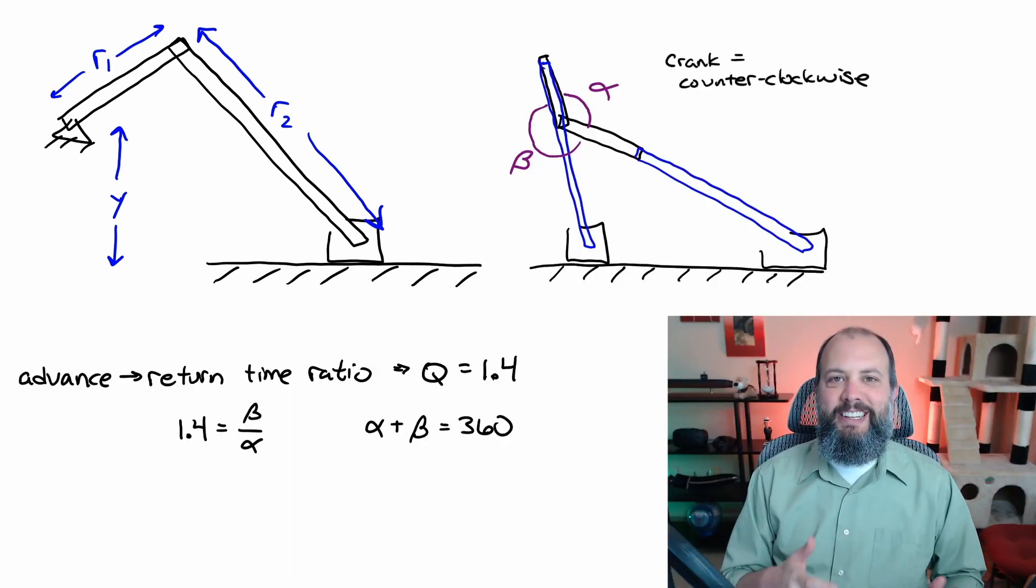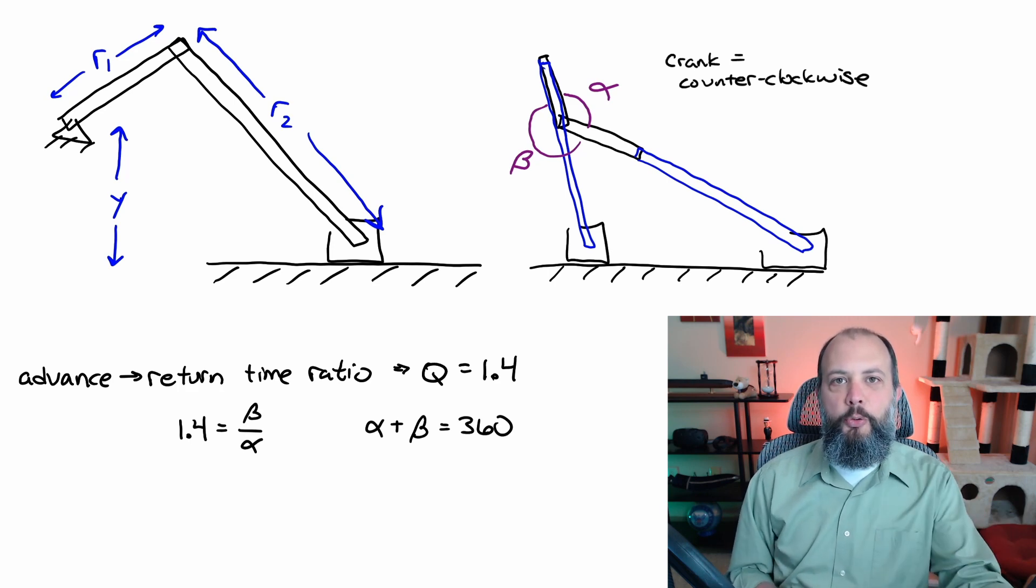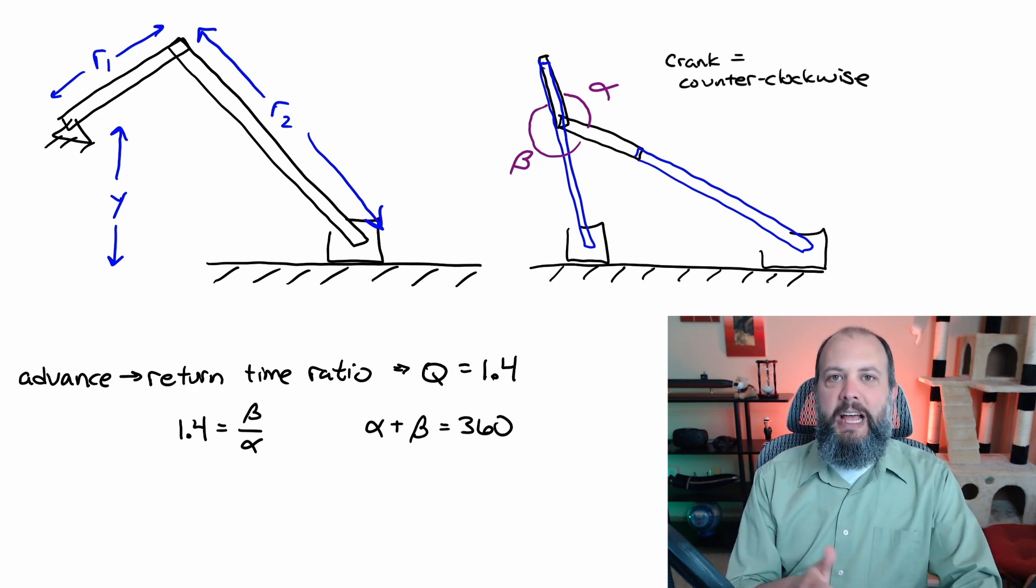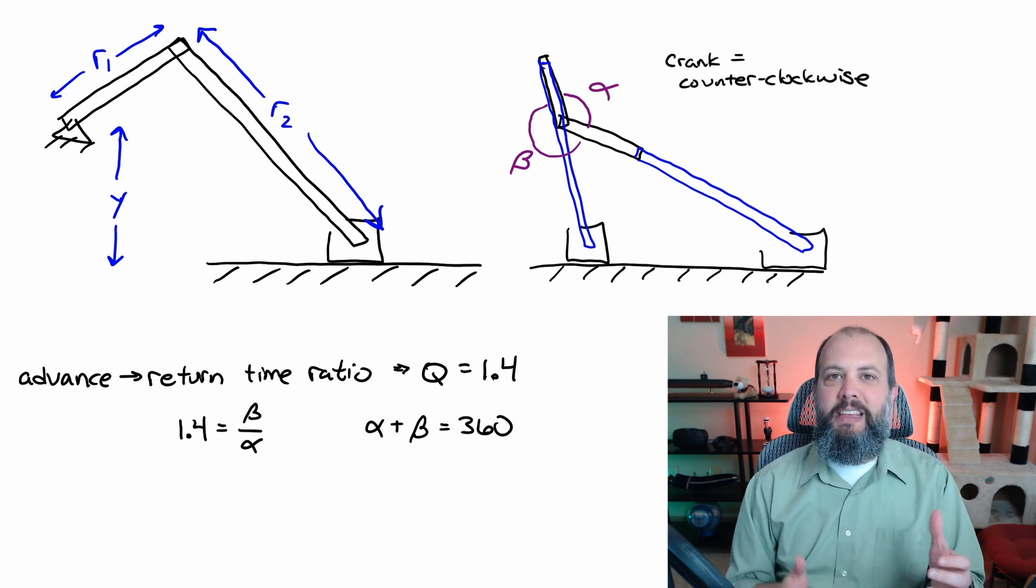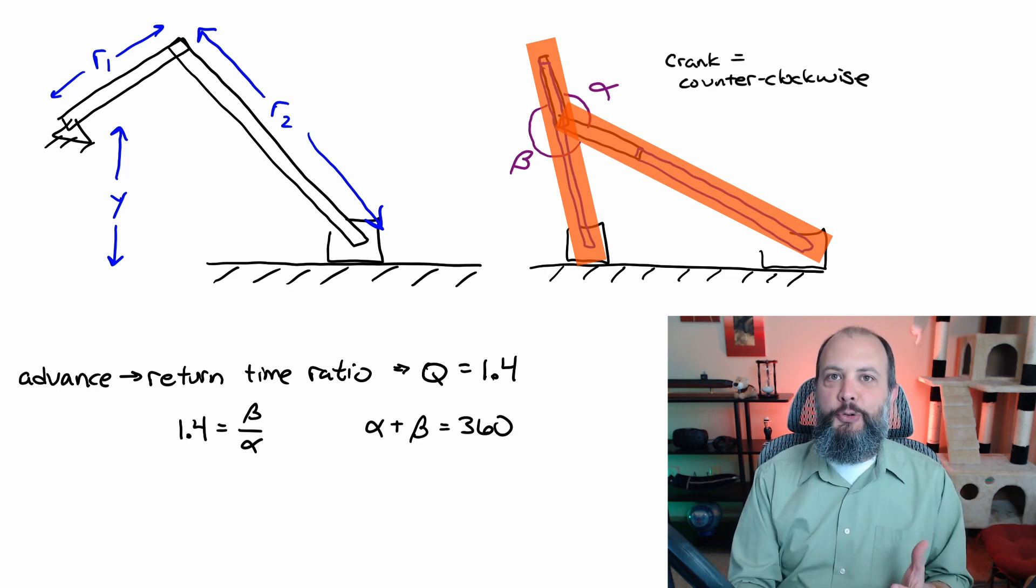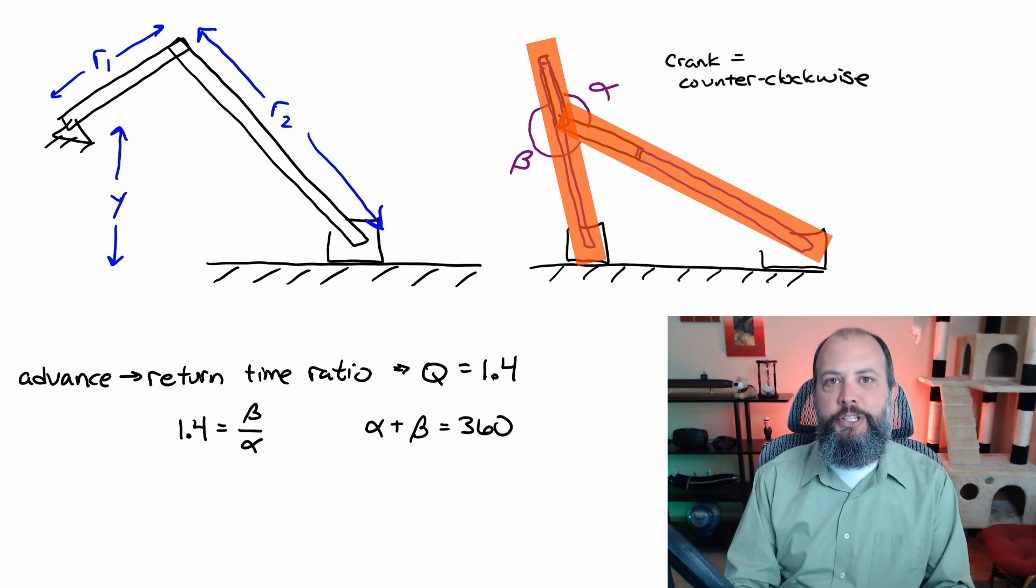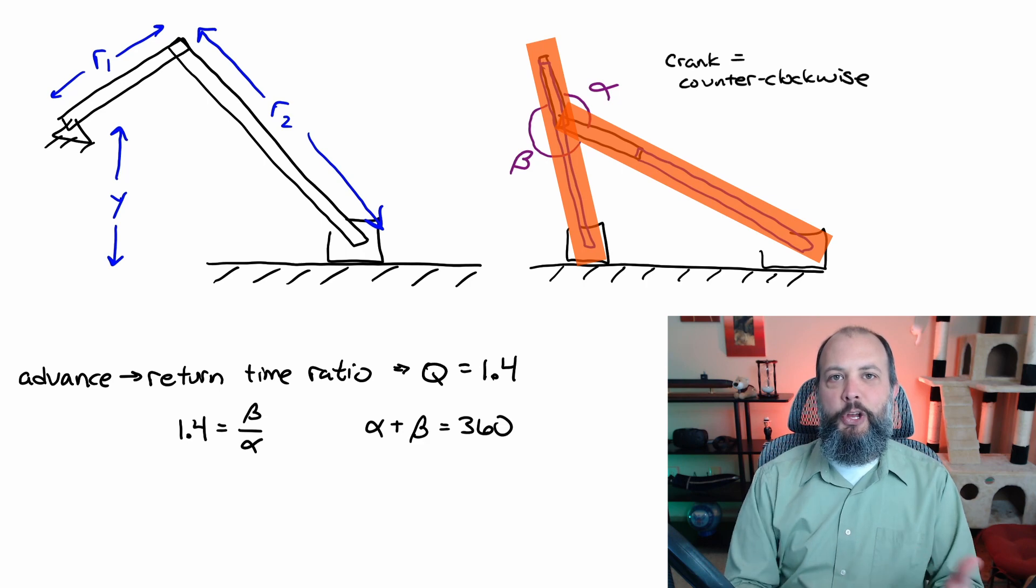So looking first at this advance return time ratio which I'm calling q, I'm going to define two angles. Alpha is going to be the return stroke and beta is going to be the advance stroke or the push stroke or forward.